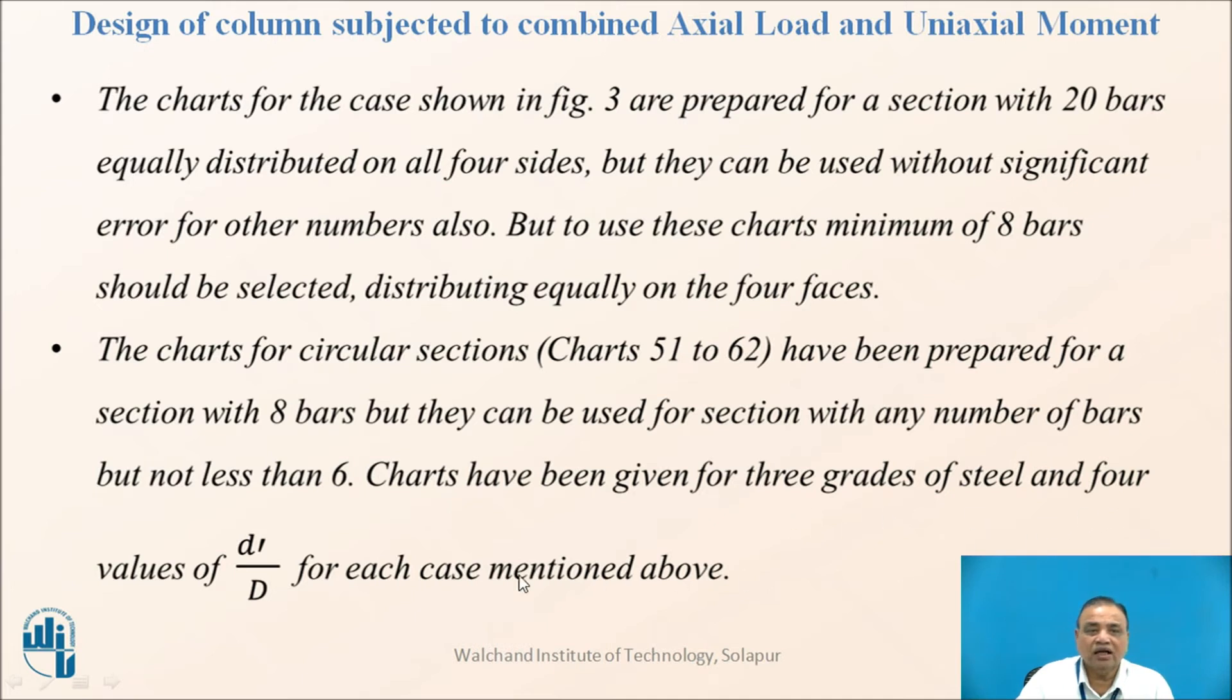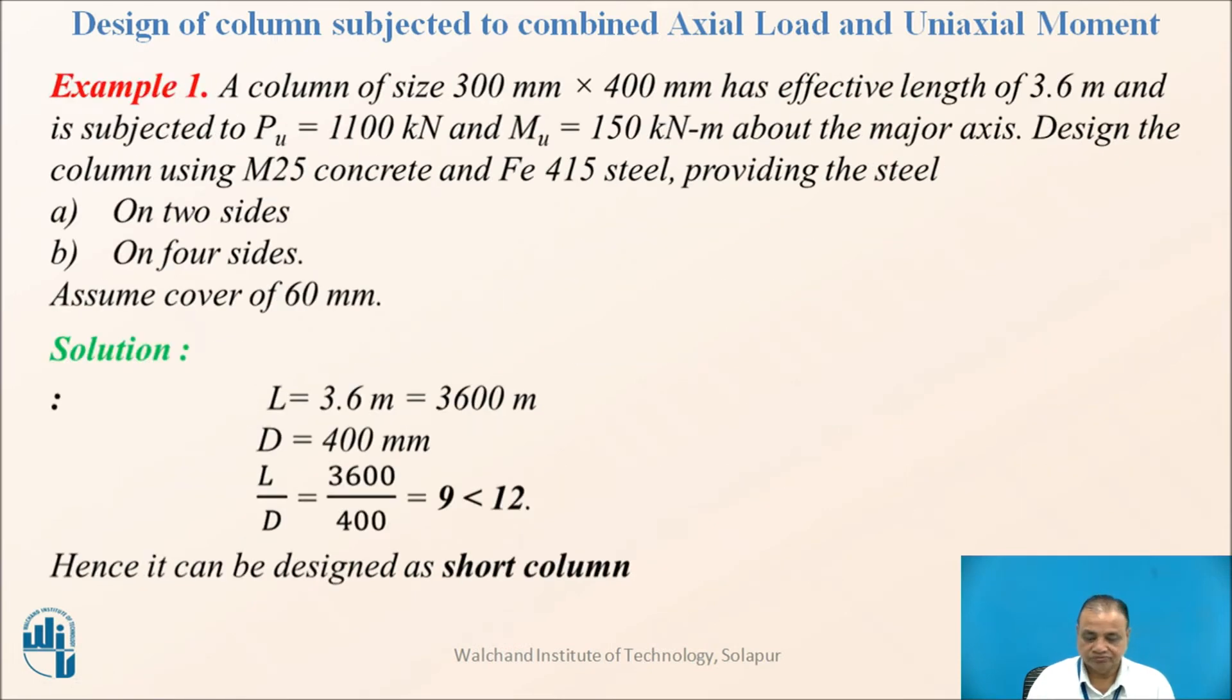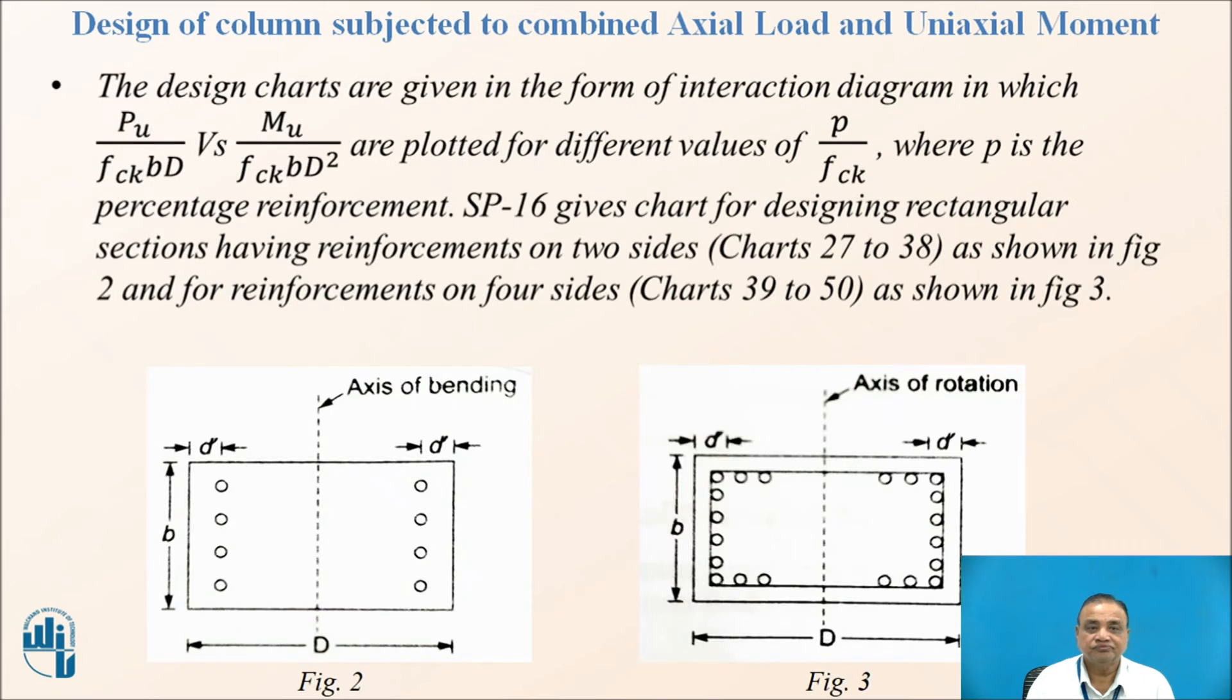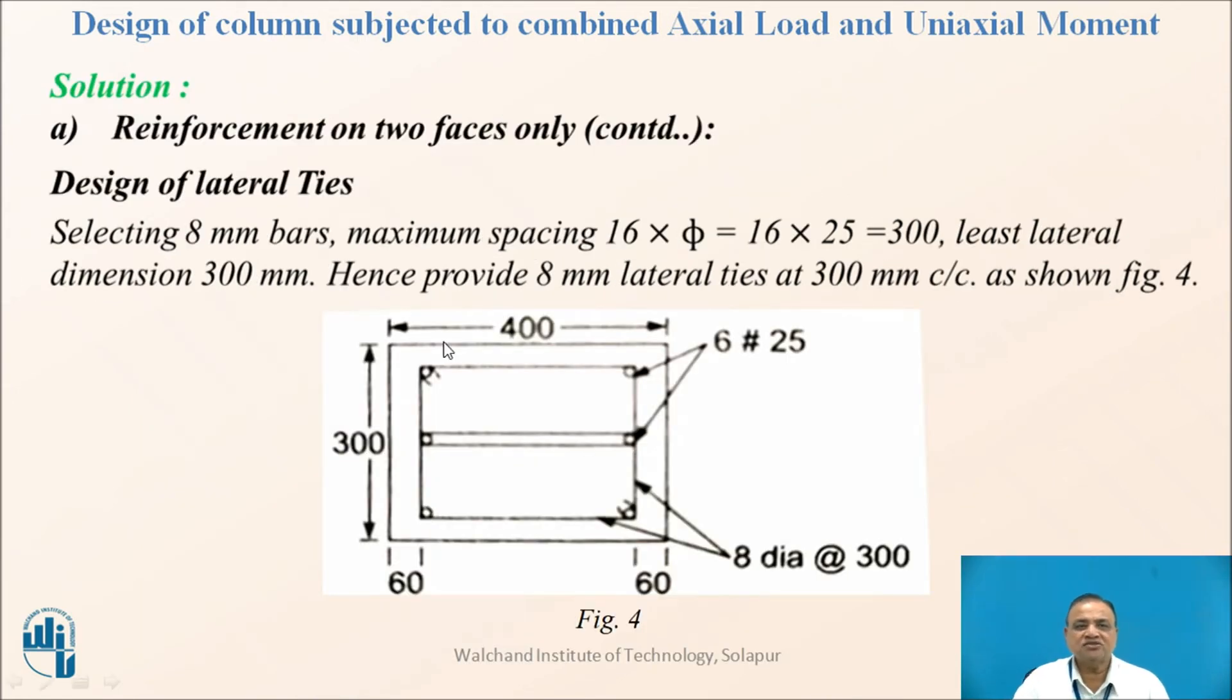Charts have been given for 3 grades of steel, that is mild steel, Fe415, Fe500, and 4 values of D dash by D. D dash is the effective cover to the reinforcement and D is your depth of the beam. This is breadth and this is depth. D dash by D for four values which usually we find in case of column that is given. If the reinforcement is placed on only two sides, now this is an example wherein only reinforcement is placed on two sides.